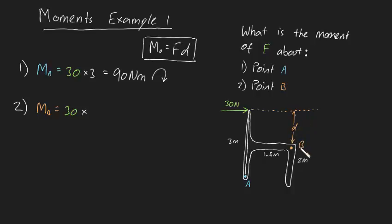And of course we can work out from just the dimensions we've been given that this must be 3 meters minus 2 meters. This is 1 meter. Okay, so we times this by 1 and that's going to be equal to 30 newton meters.